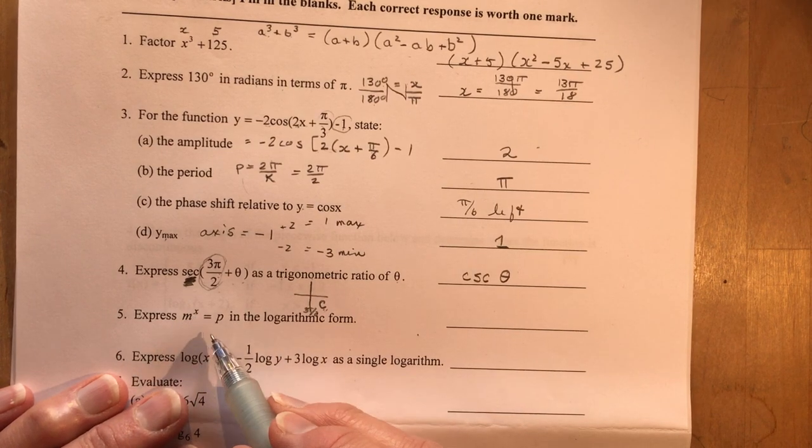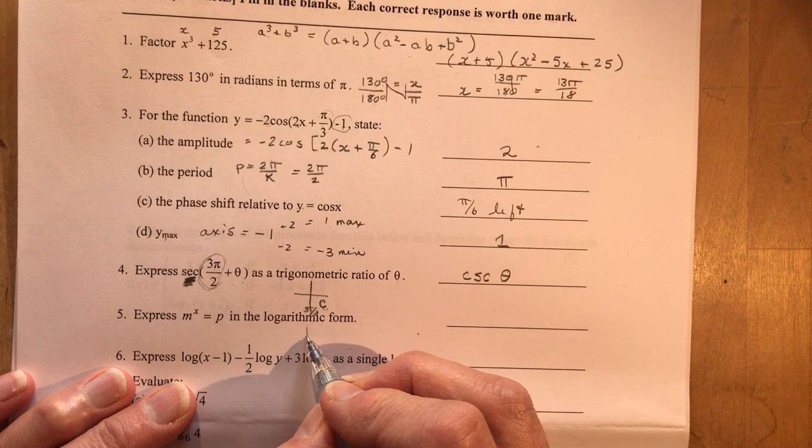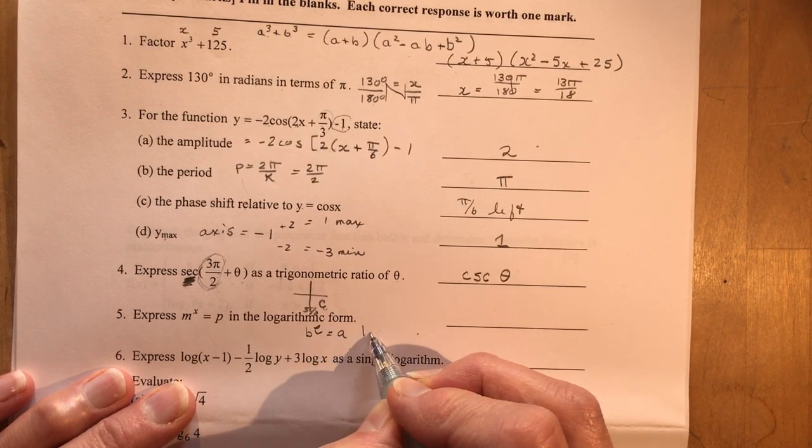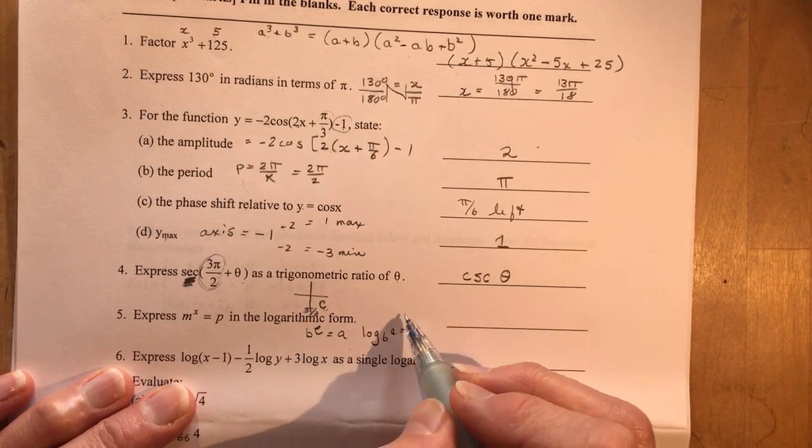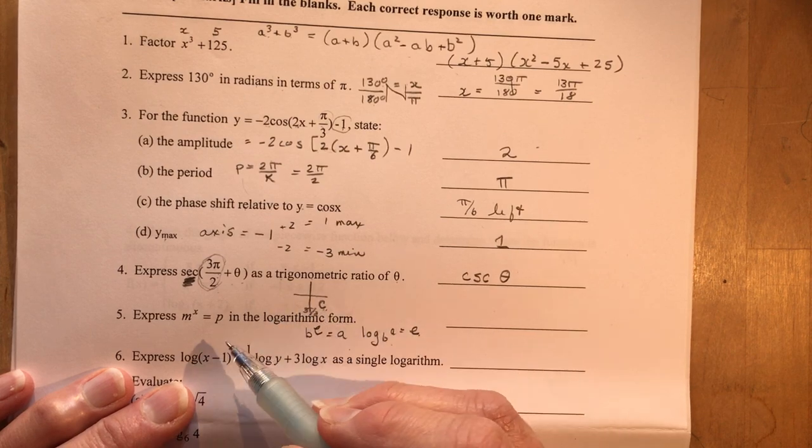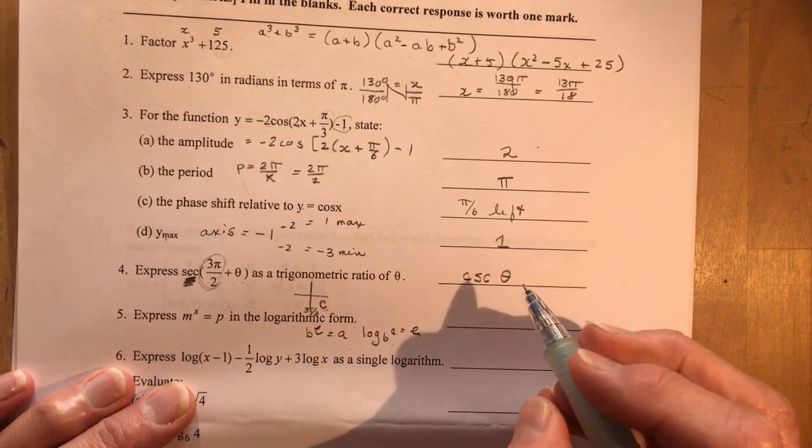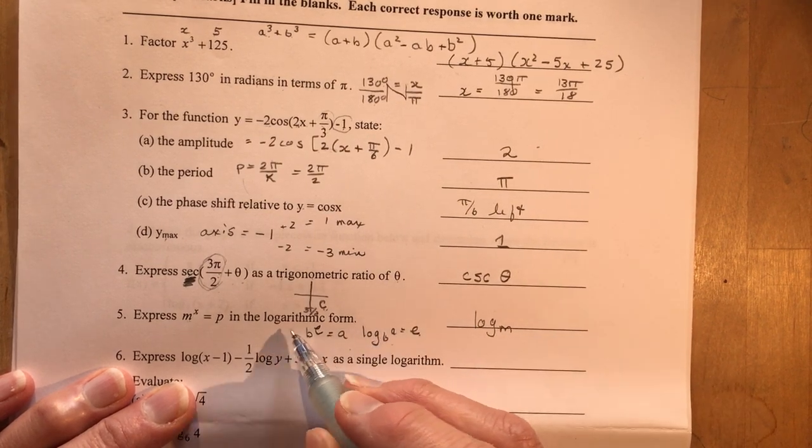Express m to the x equals p in the logarithmic form. So this is our little be a log bay. There you go. If you can remember this little saying, be a log bay, it's right there for you. So b. This is my m. It's b. So it's going to be the log of m. Because b is here. Right?